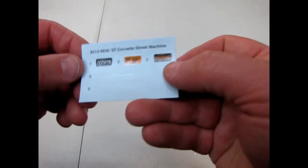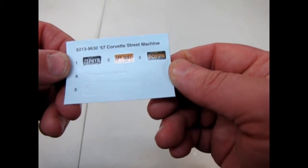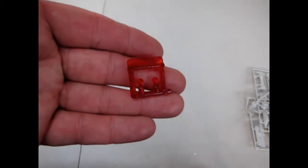And there's our decal sheet with a little bit of pinstriping, Zephyr, My Way, and Poppin license plates. And our little teeny tiny red taillights.